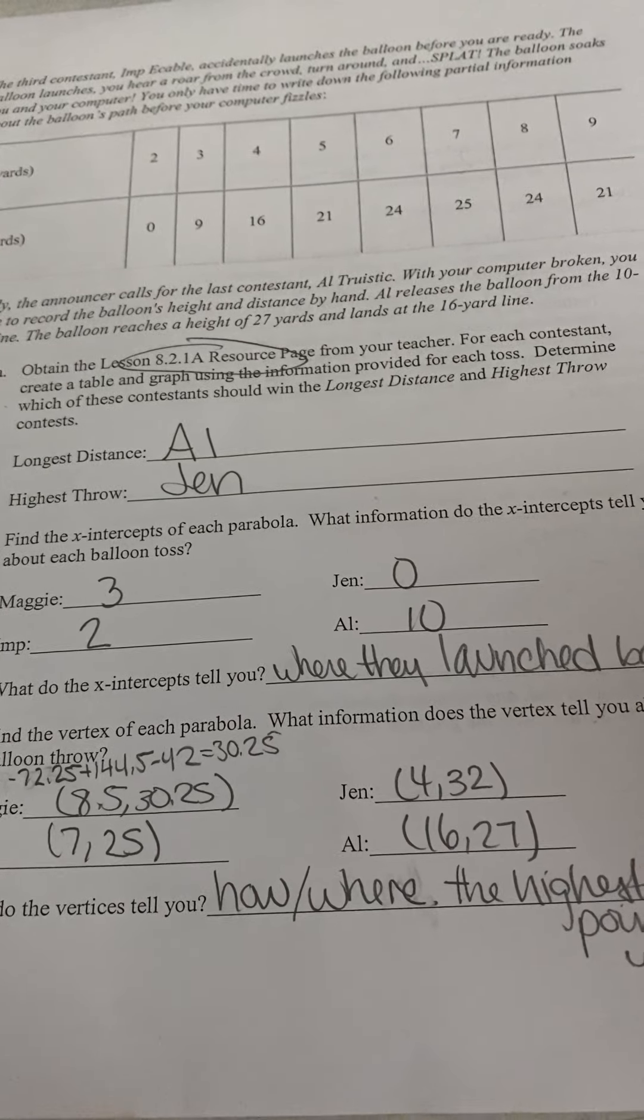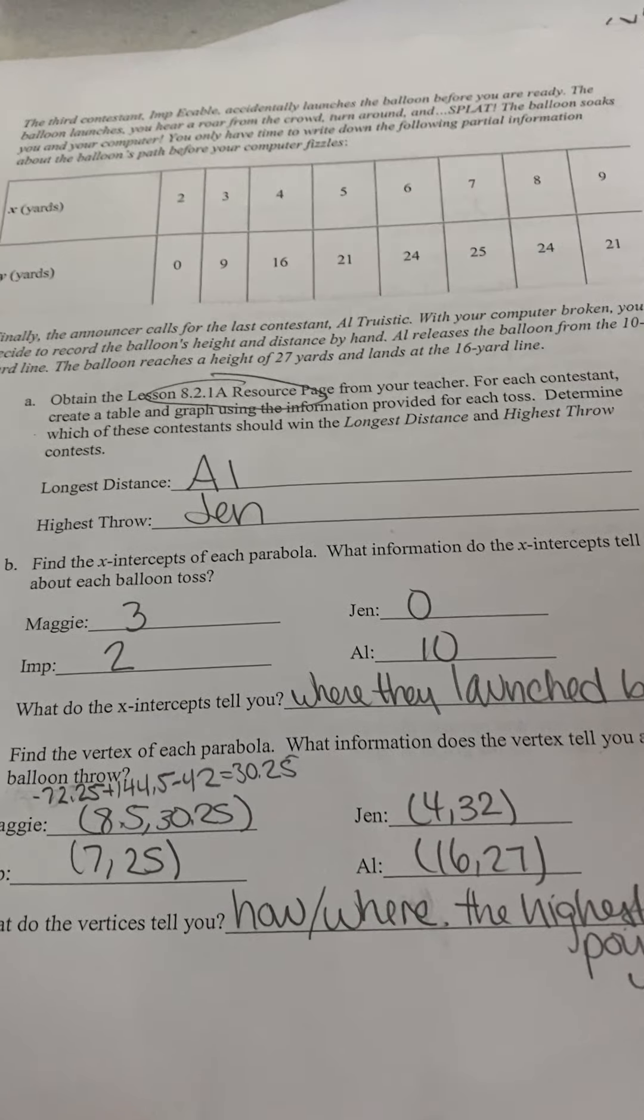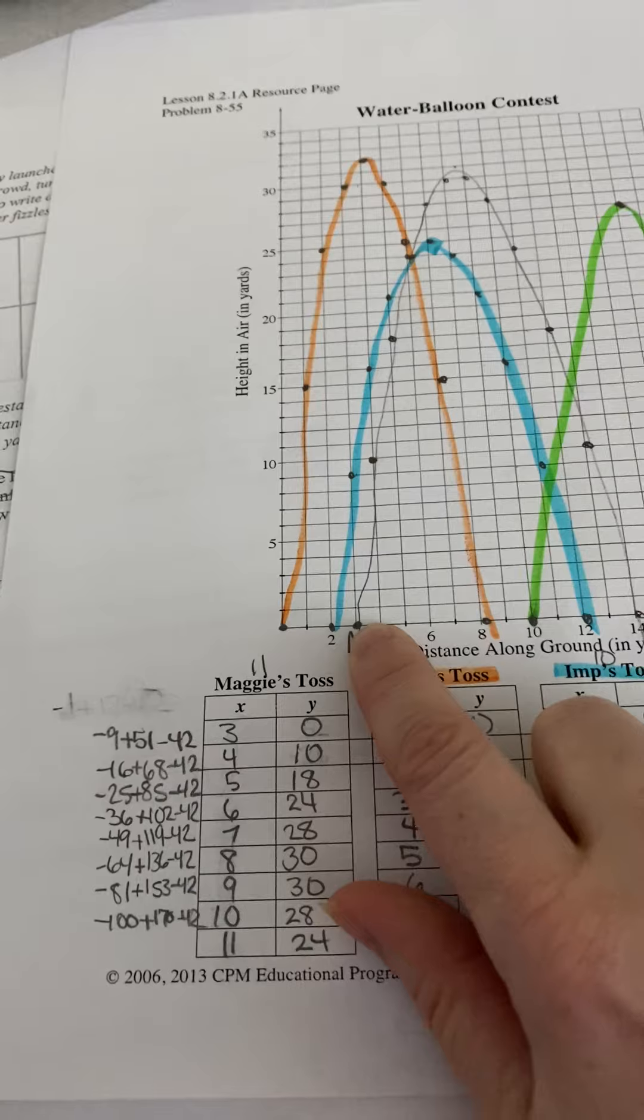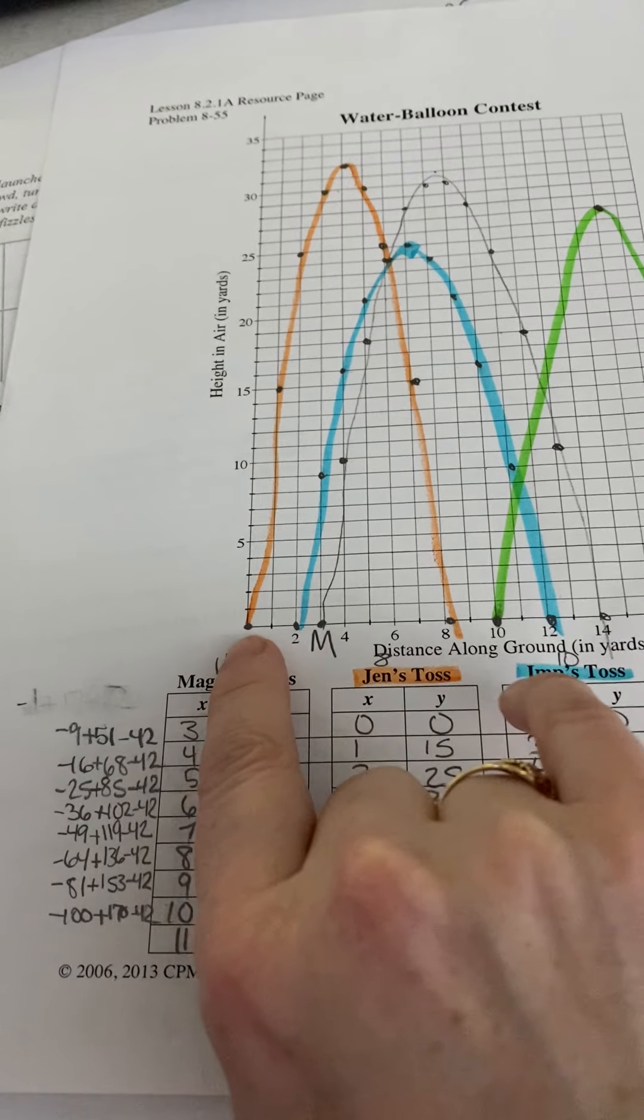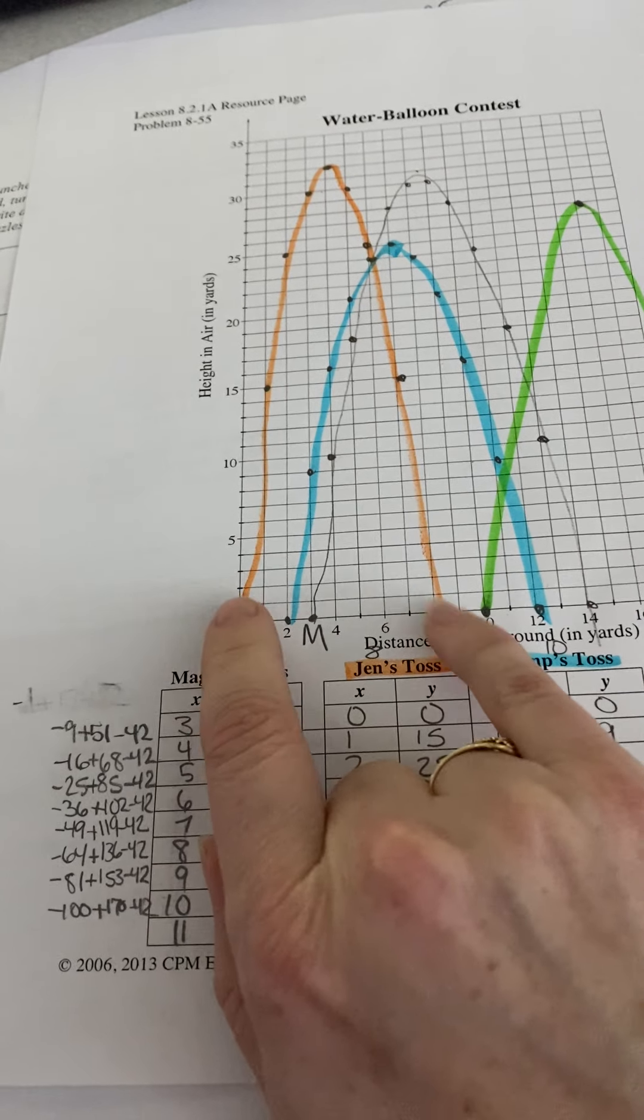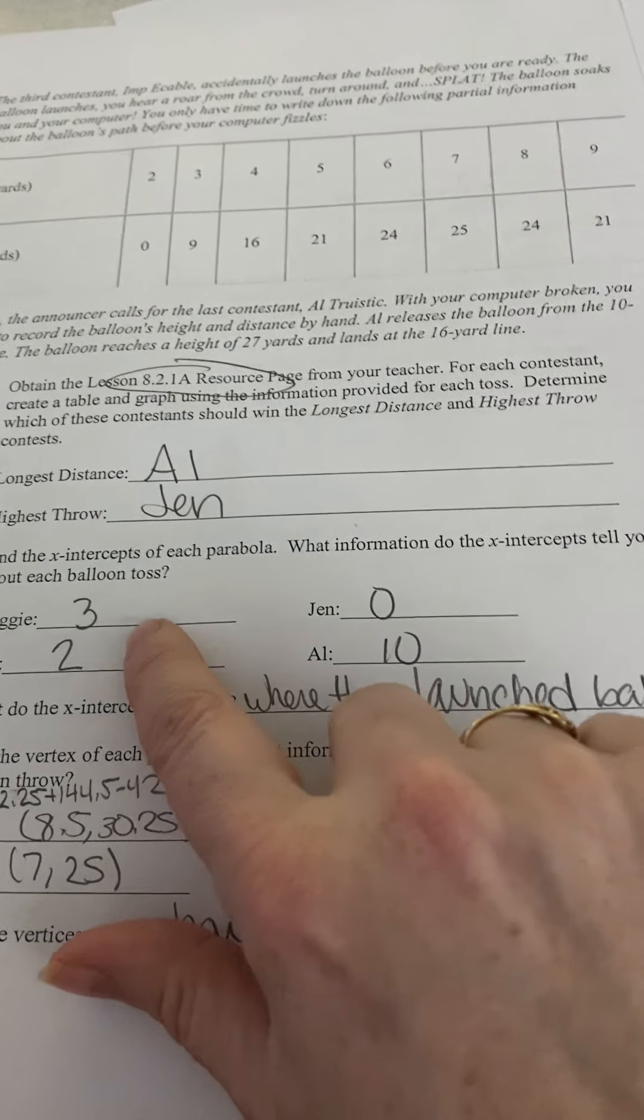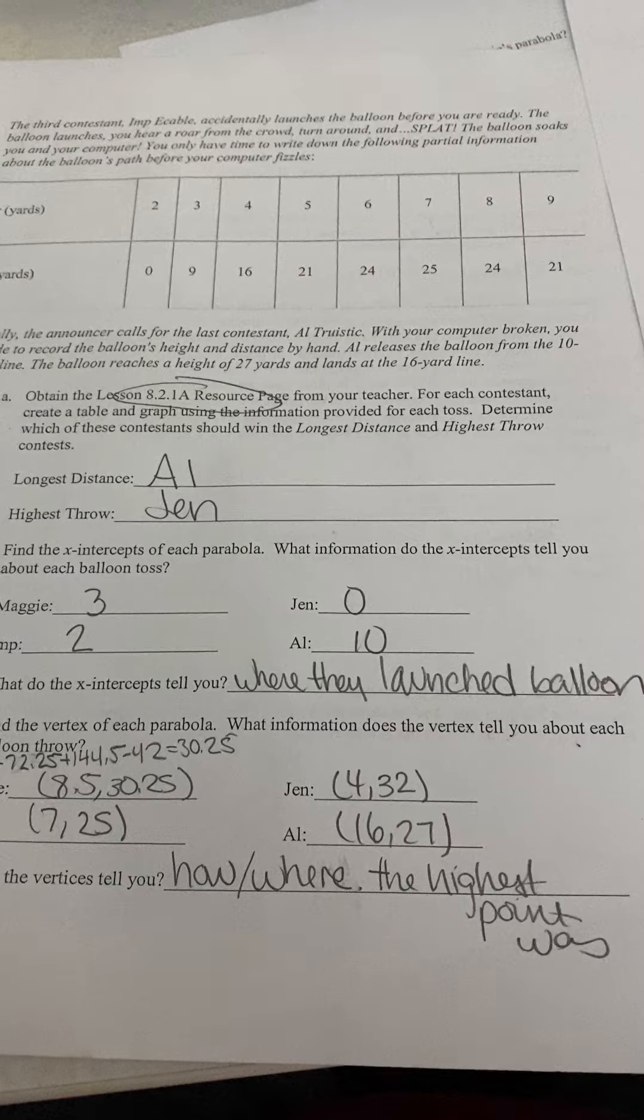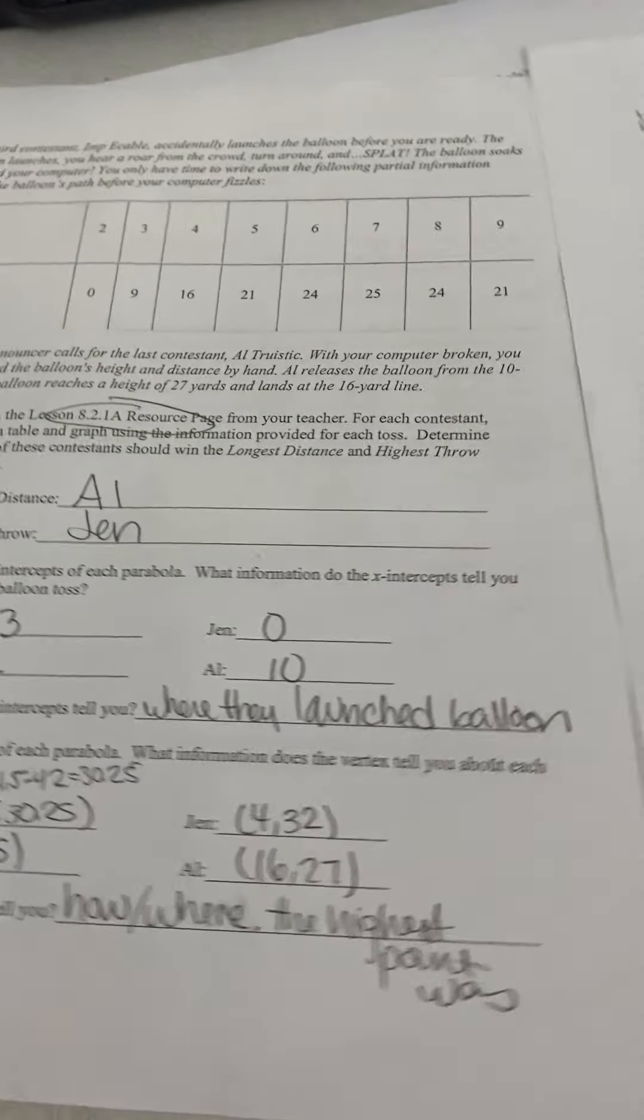And then it says, find the x-intercepts of each of the parabolas. What information do the x-intercepts tell you about each balloon? Well, the x-intercepts for Maggie, it tells us that she started at 3 and it landed at 14. Jen started at 0 and it landed at 8. So, both of those would be x-intercepts and I actually just put the first one. So, you would need to add the other ones. And so, the first x-intercept tells you where it launched the balloon. Their second x-intercept tells you where it landed.